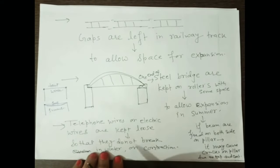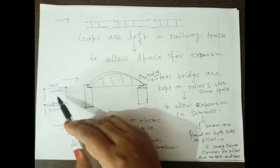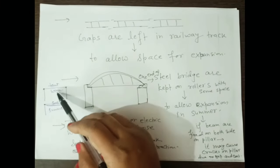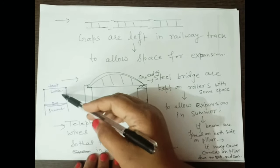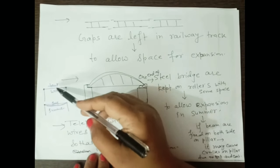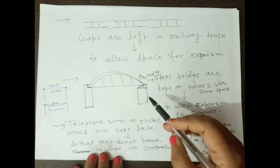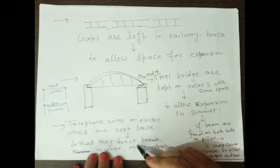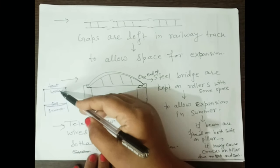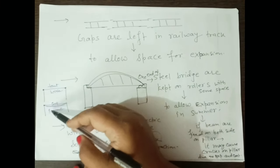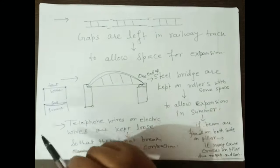You must have seen electrical wires or telephone wires. The wires are always kept a little bit loose. In winter, due to contraction, the wire becomes tight and there is a chance of breakage. To avoid such accidents, wires are kept slightly loose. In summer, the wire sags or becomes loosened due to thermal expansion.